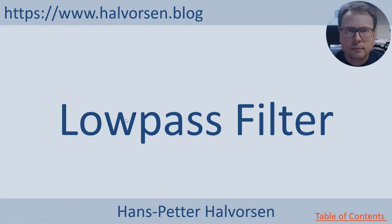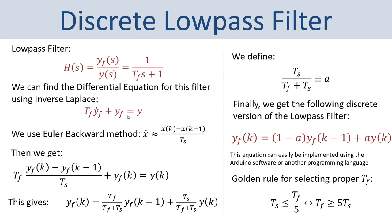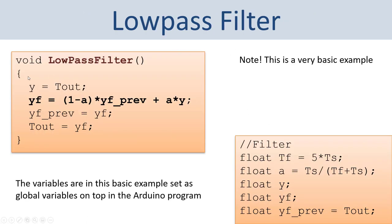Next, let's look at the low pass filter. We use it to remove noise from the measurement signal. Here is the transfer function for a low pass filter. Using inverse Laplace we find the differential equation, then apply the Euler approximation method to get a discrete low pass filter equation, which we can easily implement in Arduino software. Here you see the Arduino implementation as a function called low pass filter, with variables defined as global variables on top.